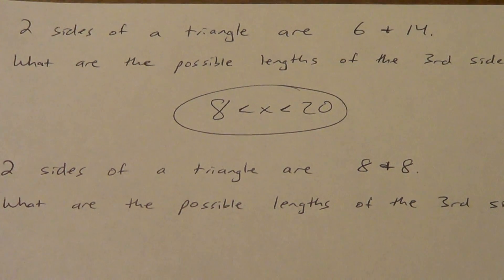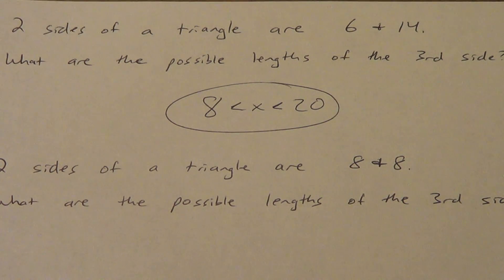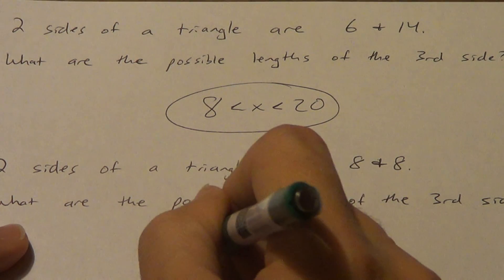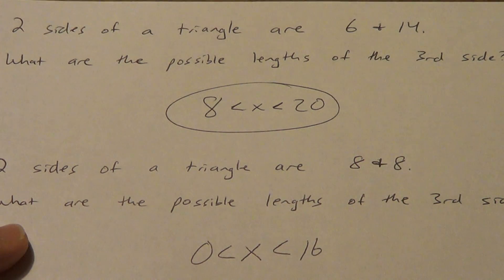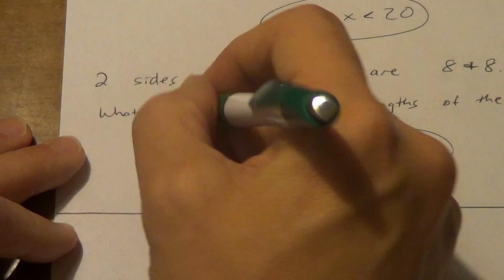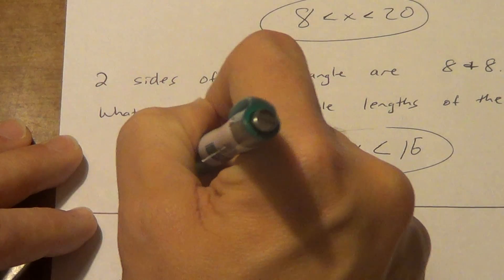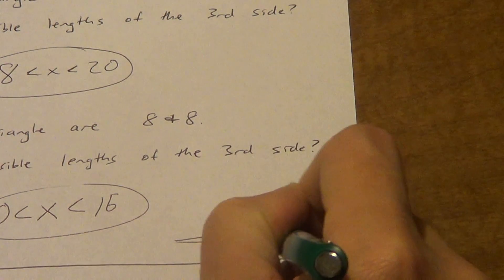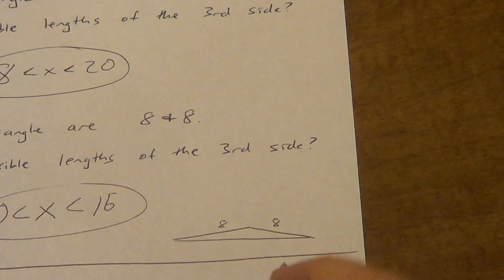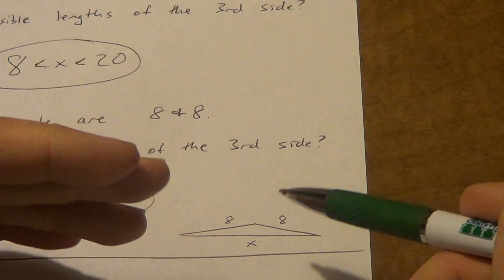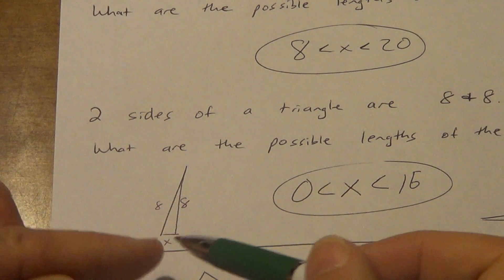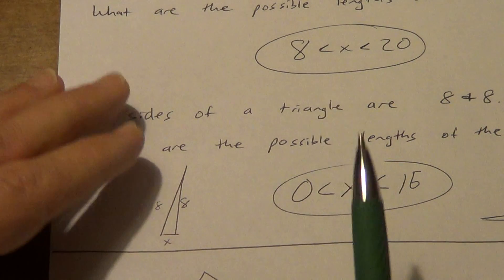Two sides of a triangle are 8 and 8 — what are the possible lengths of the third side? If we subtract: 8 minus 8 gives us 0. Add: 8 plus 8 gives us 16. This is an isosceles triangle. If you draw it really narrow, the third side gets really close to 0. If you draw it really wide, it gets close to 16. But if x equaled 16, the triangle would be completely flat — no longer a triangle. Same if x equaled 0. So it's got to be bigger than 0 and less than 16.